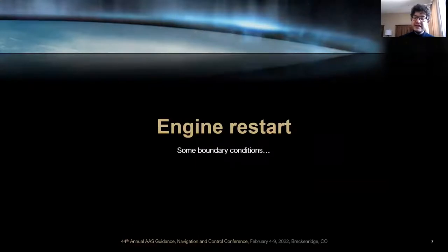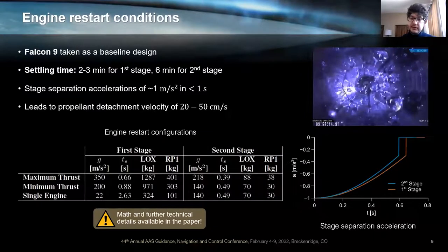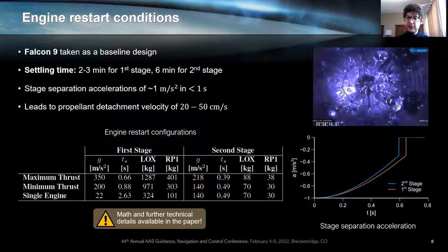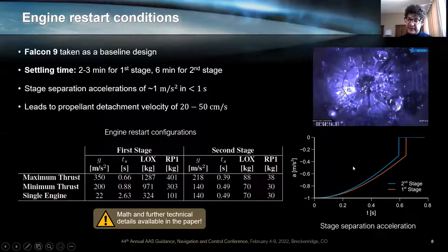Those new technologies have to be subject to several boundary conditions that we can estimate from unofficial data, like telemetry and videos made available by SpaceX. For instance, taking Falcon 9 as a baseline, we know that the first stage takes about two or three minutes to settle, and that is a requisite imposed by conops, while the second stage takes about six minutes imposed by fluid mechanics. Analyzing telemetry data from the system, we figure out that the stage separation acceleration is of the order of one meter per second squared, and that that acceleration is applied for less than one second. So we built a very simple model that is described in our paper.